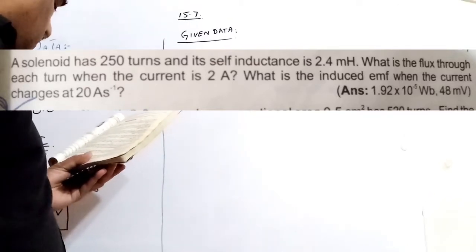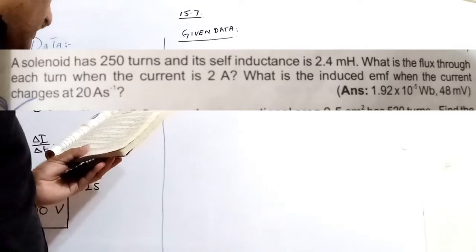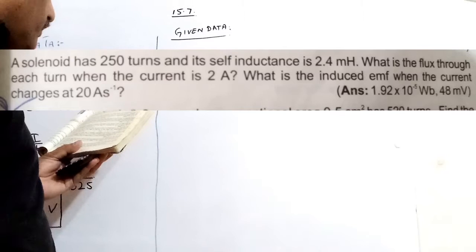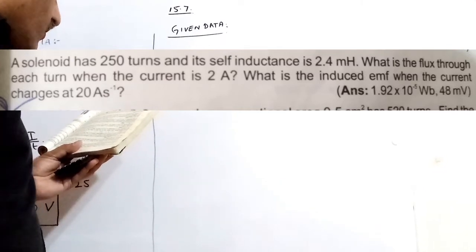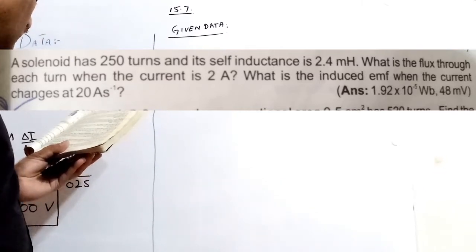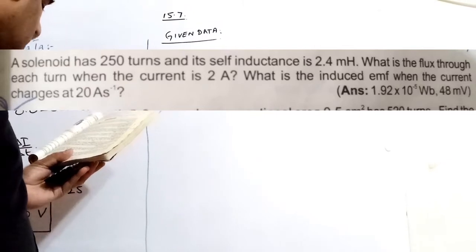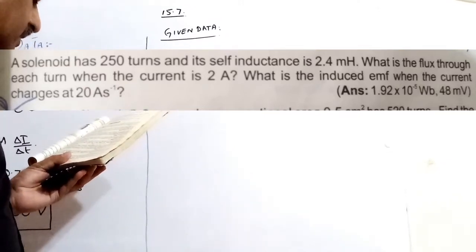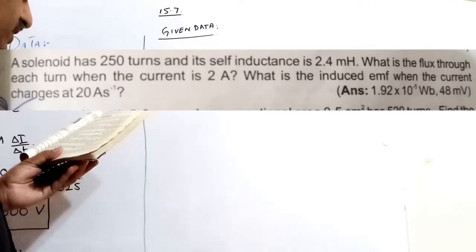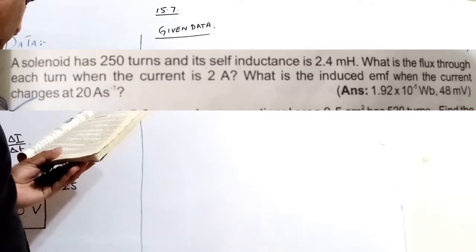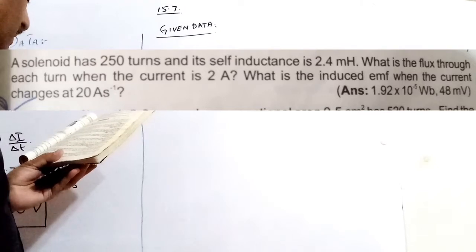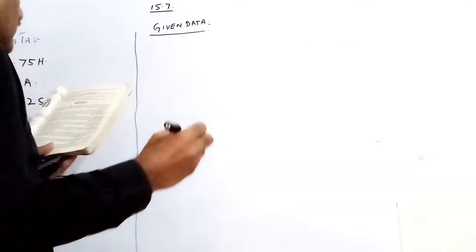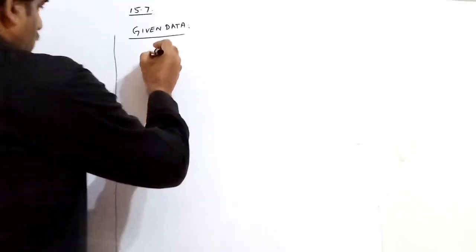Its statement is given as: a solenoid has 250 turns and its self-inductance is 2.4 mH. What is the flux through each turn when the current is 2 Ampere? This is the first part. Second part: what is the induced EMF when the current changes at 20 Ampere per second? Now the given data is